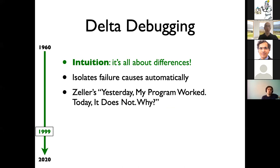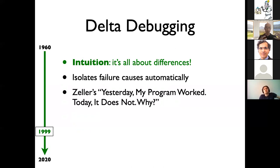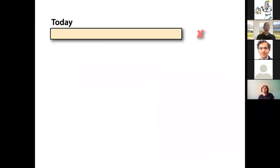The first paper from Andreas had a very indicative title: 'Yesterday my program worked, today it does not. Why?' Let me explain what I mean by binary search. Imagine this is your program from today — you run it and it fails. I'm sure all of you have had this experience: your program was working perfectly, you make some changes that seem totally irrelevant, and everything falls apart.